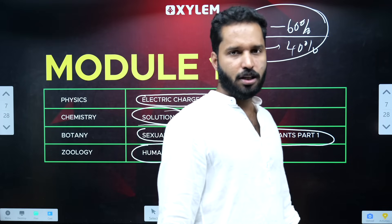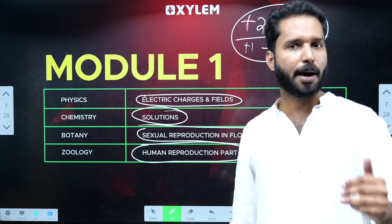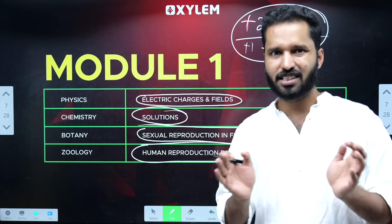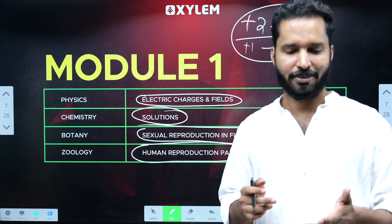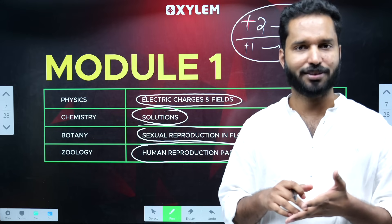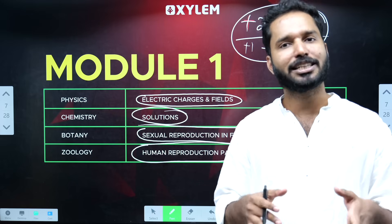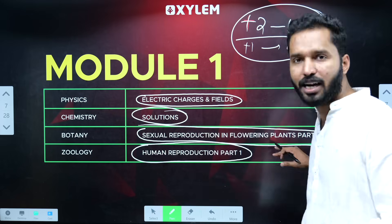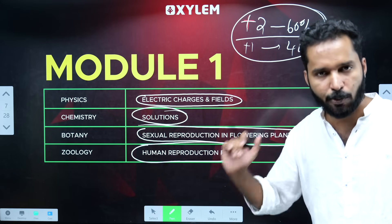High yielding chapters — we can tell you what are the first chapters. We can tell the plus two chapters. They are going to learn how to split them. When we speak about physics, chemistry, botany, and zoology, you know how to answer it.